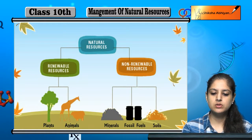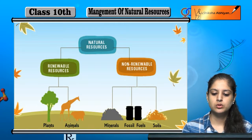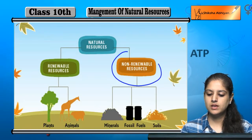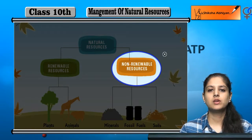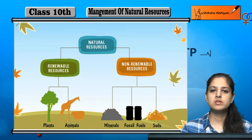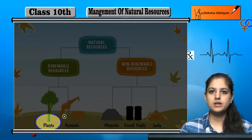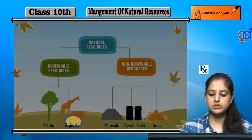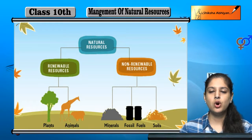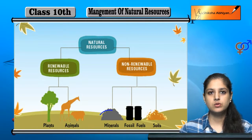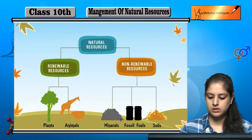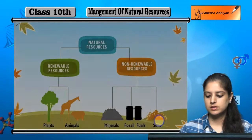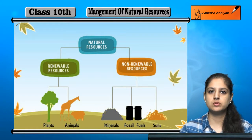Natural resources basically dho type ki hoti hai. First hai renewable resources aur second hai non-renewable resources. Renewable resources ke kuch examples hai: plants and animals. Non-renewable resources ke kuch examples hai: minerals, fossil fuels and soils. Ye kuch examples hai renewable aur non-renewable resources ke.